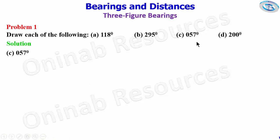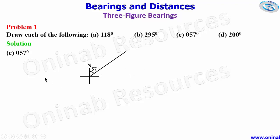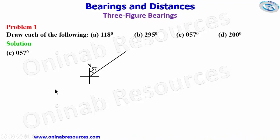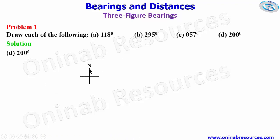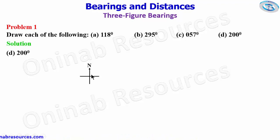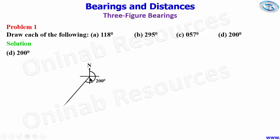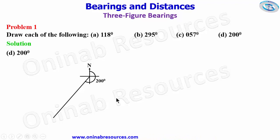For part c, we start from the north pole and move clockwise for 57 degrees, then we draw the line — that is the diagram for 057 degrees. The last one, part d, is 200 degrees. Following the same pattern, from the north pole we move: this is 90, 180, so it is going to be in this third quadrant. Drawing from the north pole to the third quadrant, which is 200 degrees, we draw the line. This is the diagram for 200 degrees.